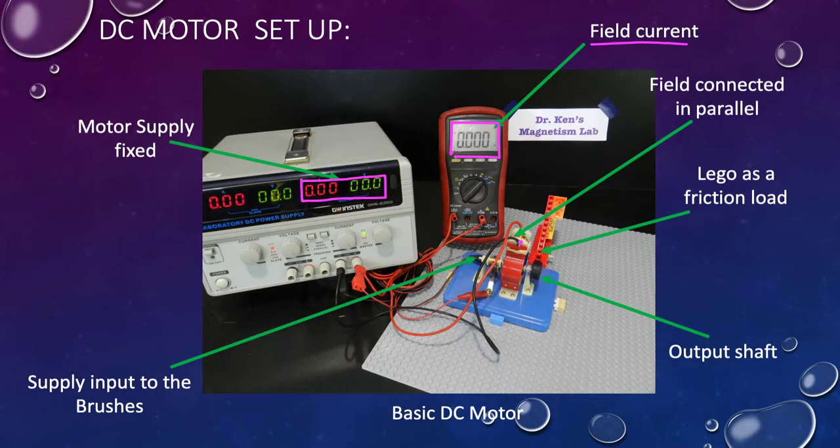You'll see the field is connected separately. If you follow the field wiring, it goes straight to the power supply. It just goes up via the meter, through the meter and back to the power supply. My field connection is in parallel. And my armature connection is in parallel. I still have my output shaft. I still have my friction wheel, as you can see here. And at the moment, my Lego friction brake is ready to come on as required.